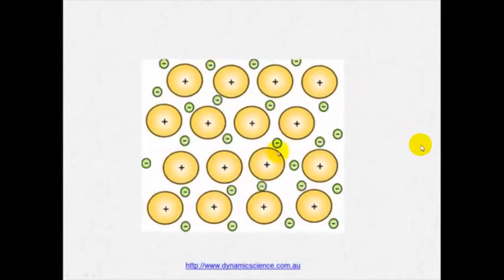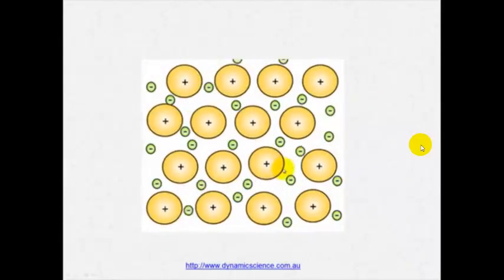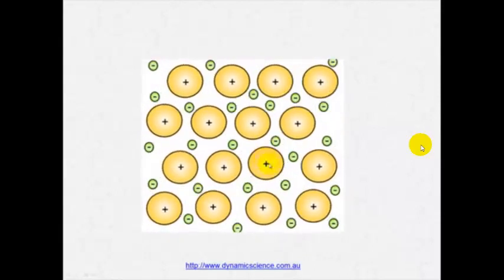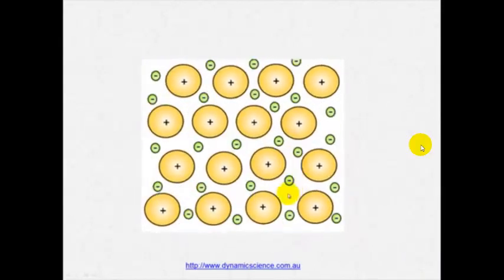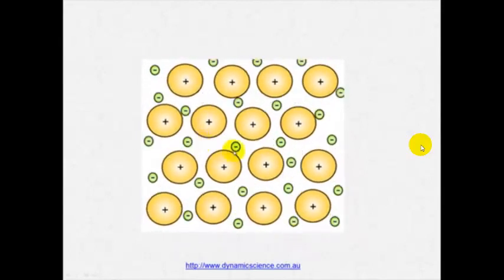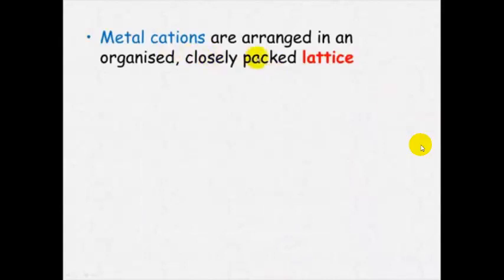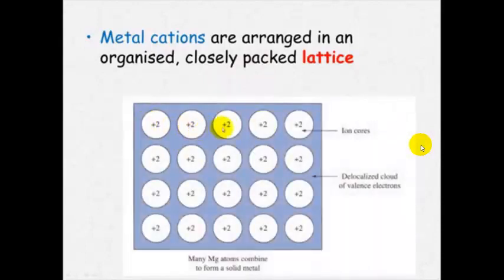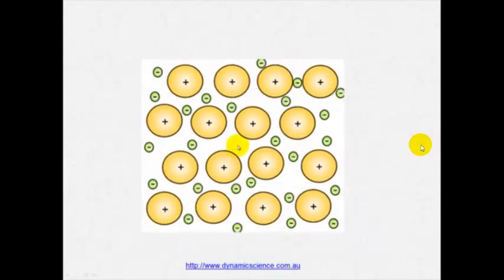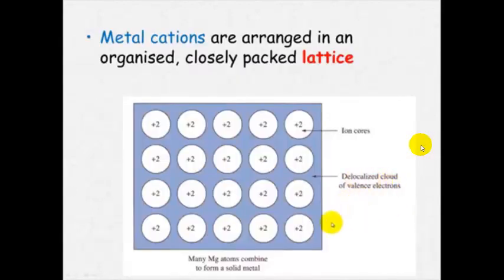So it looks something like this. This is a version of it moving. Because remember everything has got kinetic energy. So these particles or the cations will be vibrating and the electrons will be whizzing around in between. These metal cations are arranged in an organized, closely packed lattice. So you can see here it's sometimes represented just with the cation in the middle and the sea of delocalized electrons around the outside. It's represented here as a cloud of valence electrons. Because as we've already learned, electrons are whizzing around so fast that they form a cloud effect. And that's Schrodinger's wave or cloud effect.